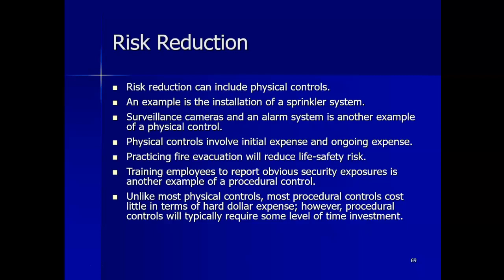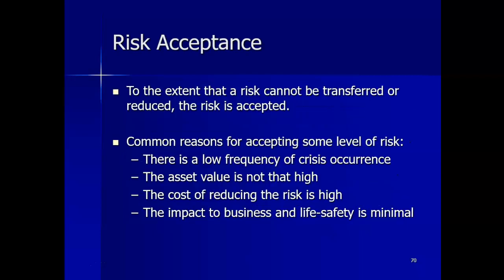Risk reduction can include either the introduction or enhancement of physical controls. An example of a physical control would be the installation of a sprinkler system to suppress fires, which will involve an initial expense and possibly an ongoing expense as well. Risk reduction can also include the introduction or enhancement of existing procedures. Developing and practicing formal fire evacuation plans will reduce the life safety risk associated with fires. Training employees to report obvious security exposures is another example of a procedural control that reduces risk. Unlike most physical controls, most procedural controls have a minimal cost impact, but will typically require some level of time investment.